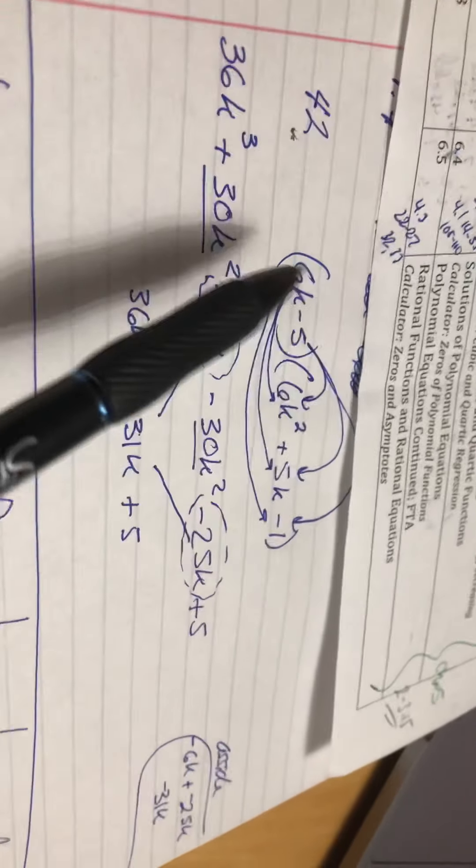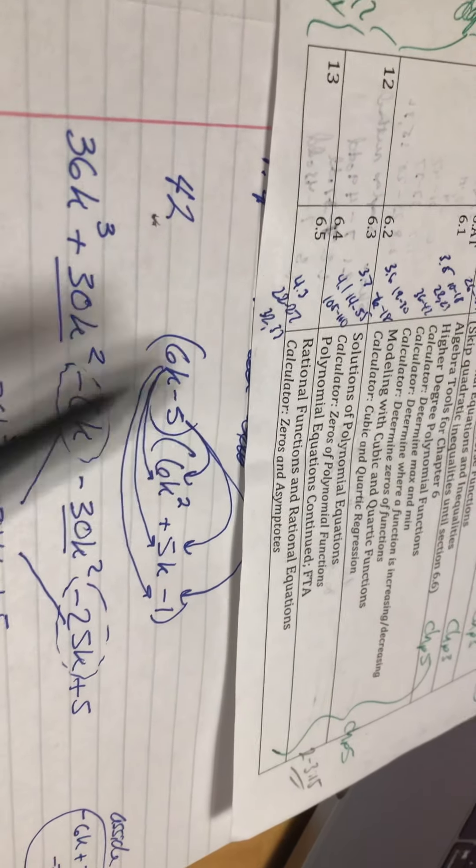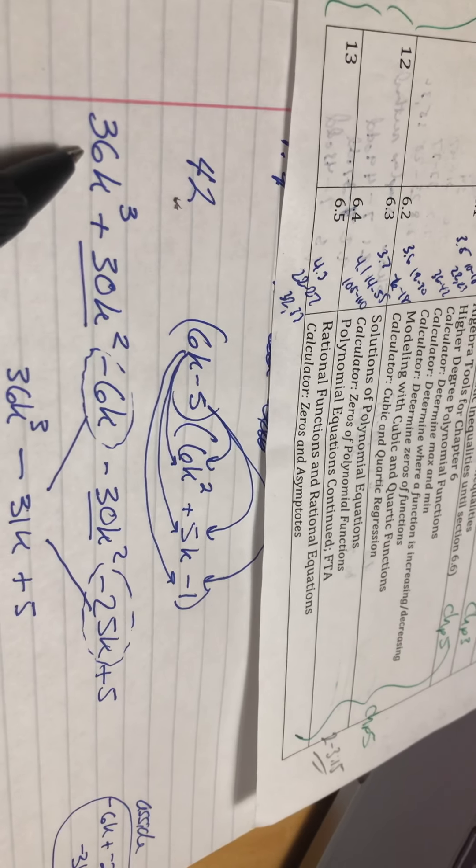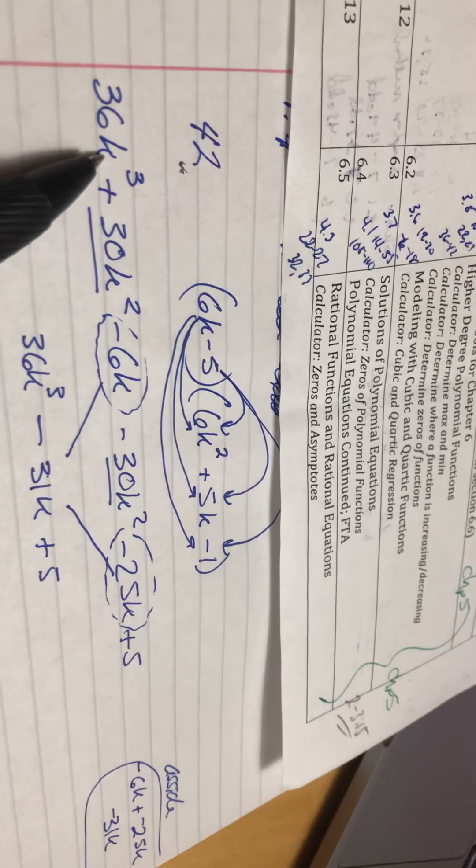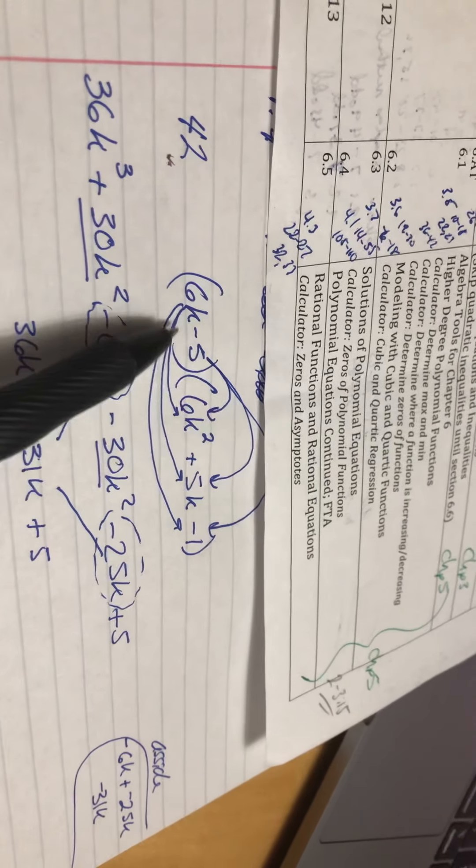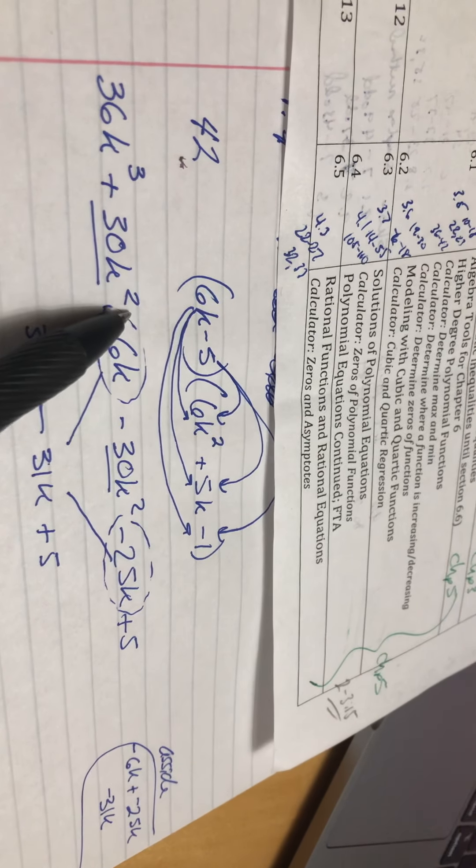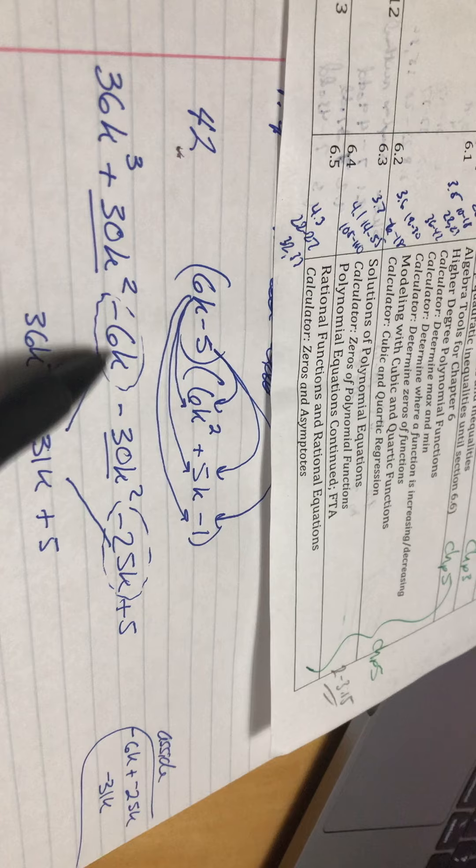So the first arrow, 6k times 6k squared. Well, 6 times 6 is 36 and k times k squared is k cubed. Then you have 6k times 5k. Well, the 6 times the 5 gets you 30, the k times the k gets you k squared. And then we do 6k times negative 1 which is negative 6k.